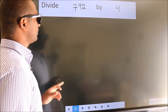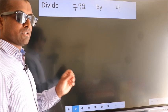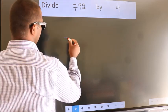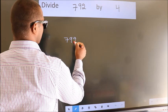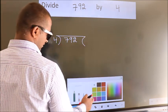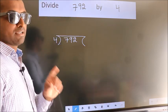Divide 792 by 4. To do this division, we should frame it in this way. 792 here, 4 here. This is your step 1.